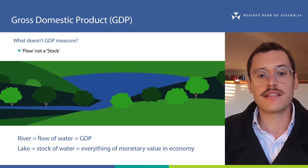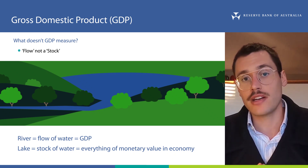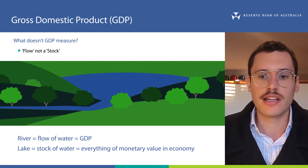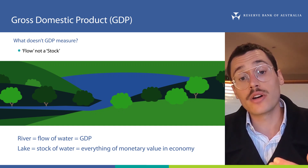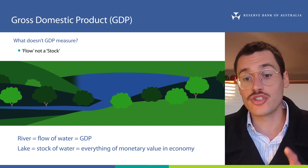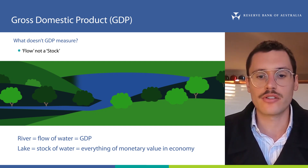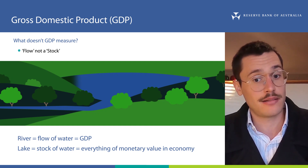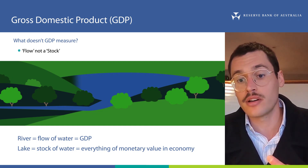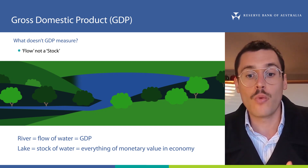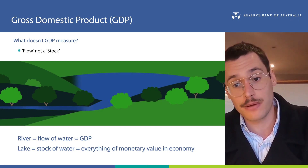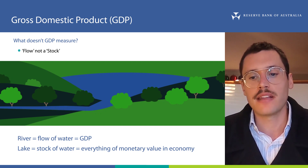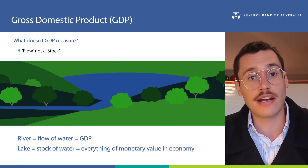This means there are some things that don't make us better off which can still increase GDP. Take for example the bushfires in 2019-2020, where many people tragically lost their homes. That destruction is like water disappearing from the lake — by itself it doesn't change GDP, even though it made the country worse off. However, these people will need to rebuild their homes, and the process of rebuilding would be considered part of GDP because it's the production of a new good. So the rebuilding of homes caused by the bushfires would actually increase GDP, even though it resulted from a natural disaster and caused great hardship.